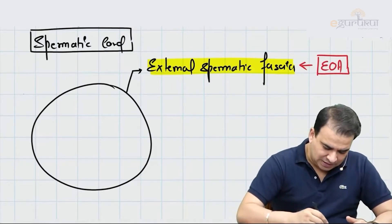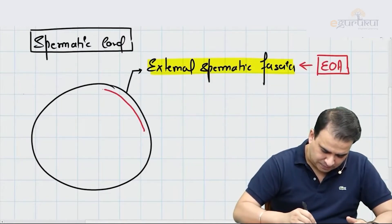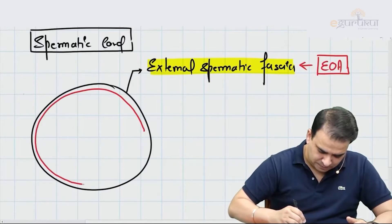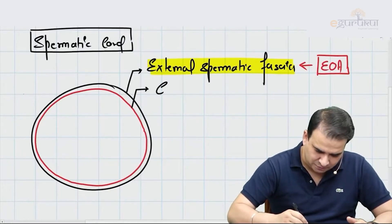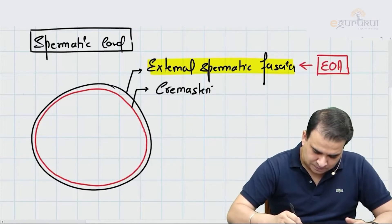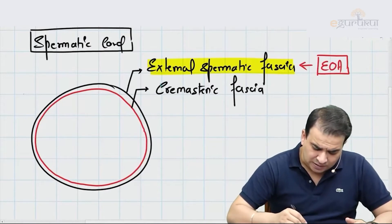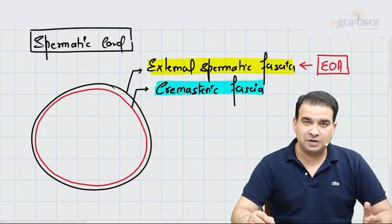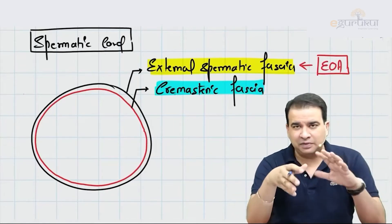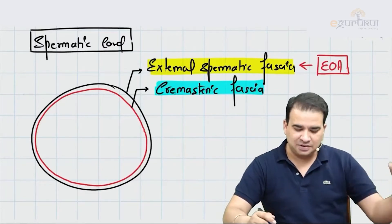The layer inside, in between, is the cremasteric layer. The second layer is the cremasteric fascia or cremasteric layer. When I say cremasteric layer, we have a cremasteric muscle as well as cremasteric fascia in it — it's a layer which is made up partly by the fascia and partly by the muscle. So the better term to use here is cremasteric muscle and fascia.